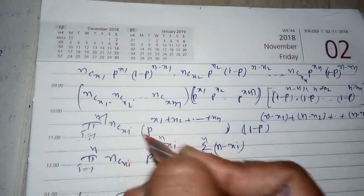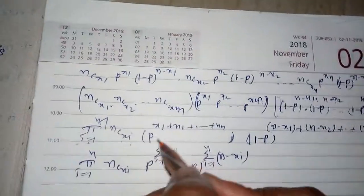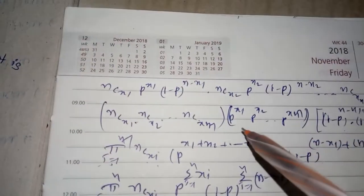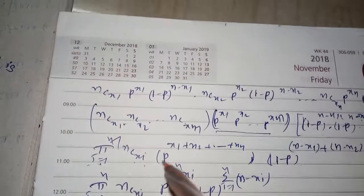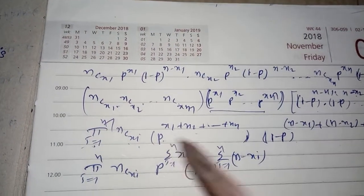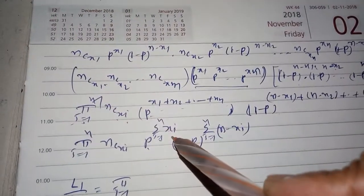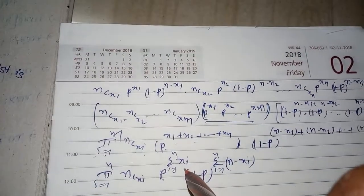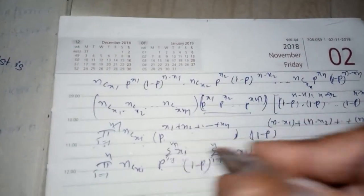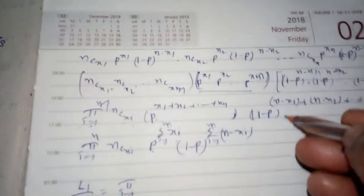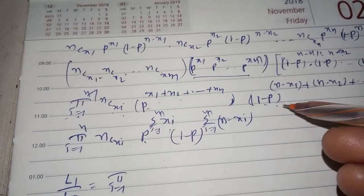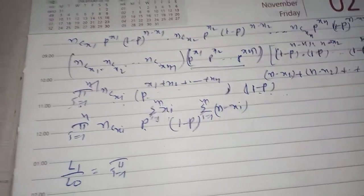All these are products. We get pi from i=1 to M of NCX_i. Since the bases are the same, we can add the powers: P^(summation of X_i) * (1-P)^(summation of N-X_i). This is the likelihood function.